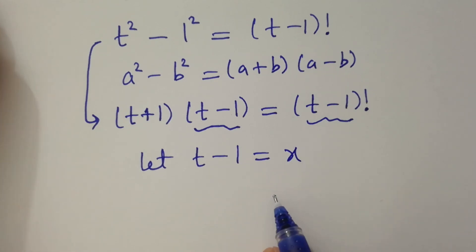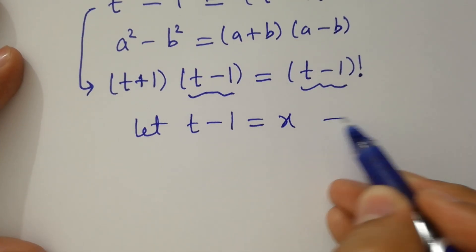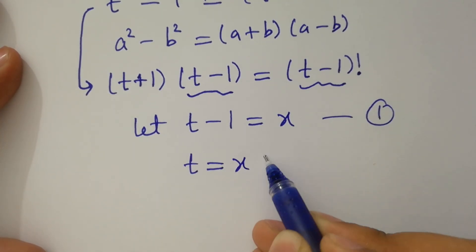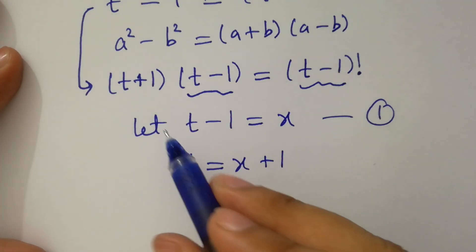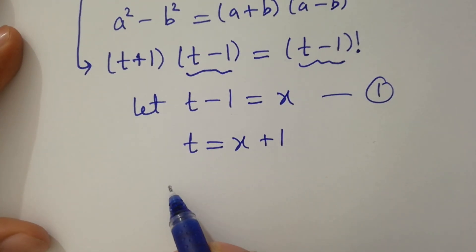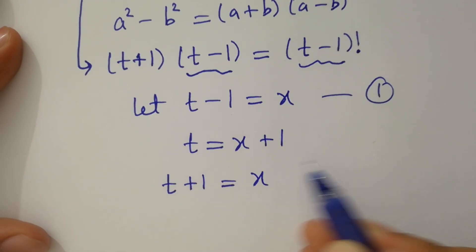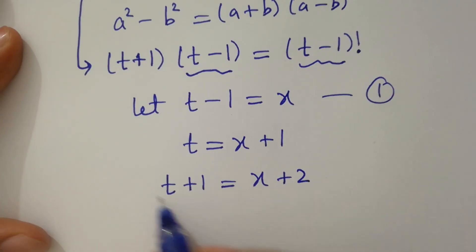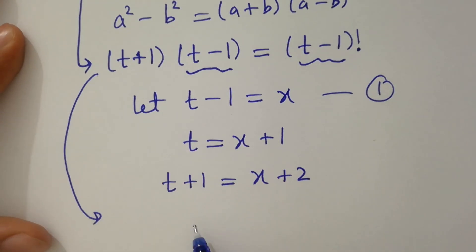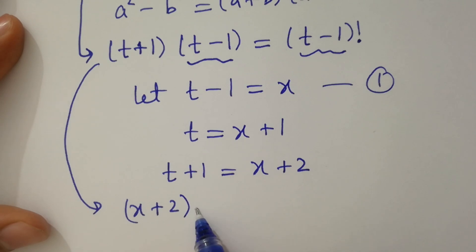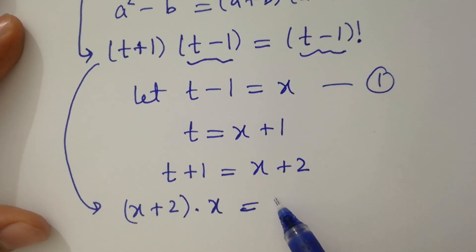Let t minus 1 equal x — call this equation 1. Then t equals x plus 1, and t plus 1 equals x plus 2. So the equation becomes (x+2)(x) equals x factorial.